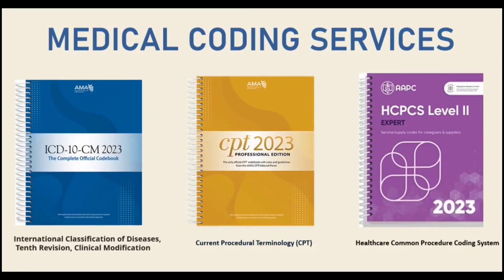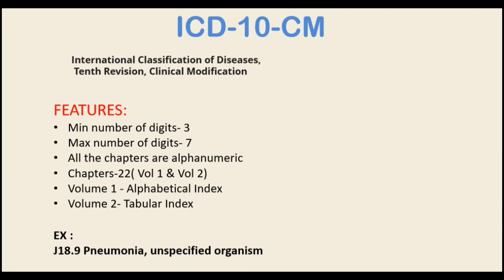The medical coding process runs through three services: ICD-10-CM, CPT, and HCPCS. ICD-10 means International Classification of Diseases — version 10, CM means clinical modification. Its features include a minimum of three digits and a maximum of seven digits, a combination of alphanumerics, 22 chapters, volume one (alphabetical index) and volume two (tabular index). For example, pneumonia is coded as J18, and unspecified organism is J18.9.